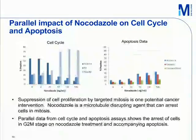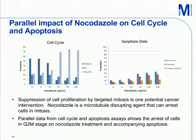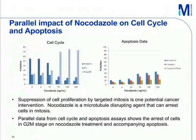Here is another example: nocodazole, a well-known anti-cancer agent and microtubule-disrupting agent that can arrest cells in mitosis. Looking at the cell cycle data, there is a large conversion of cells at 50 nanograms per ml concentrations, showing a clear G2/M arrest—the cells are locked in G2/M phase. The data on the right shows that apoptosis is also starting to emerge in these cells under this treatment condition, increasing with treatment concentration.